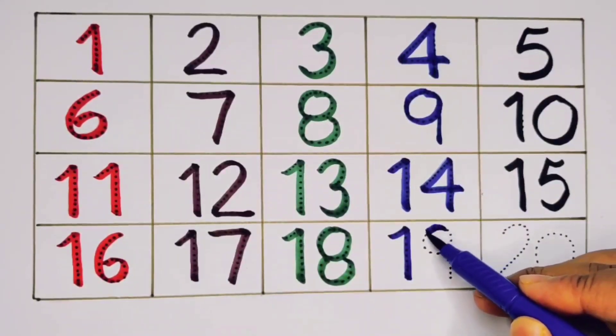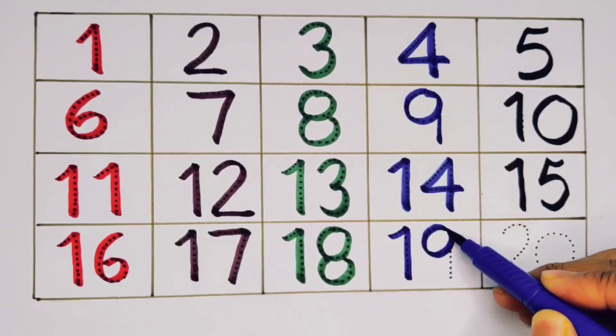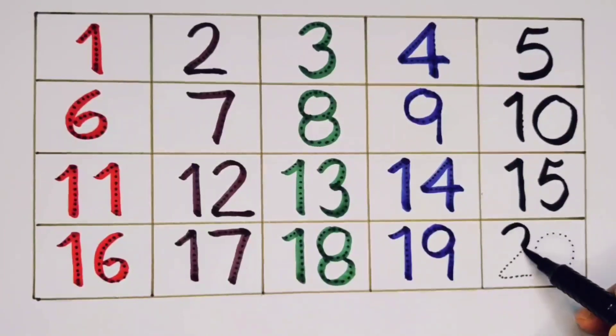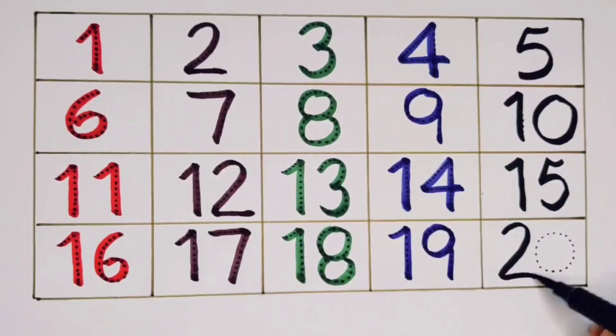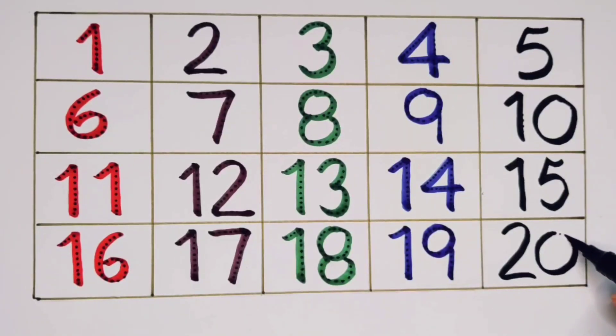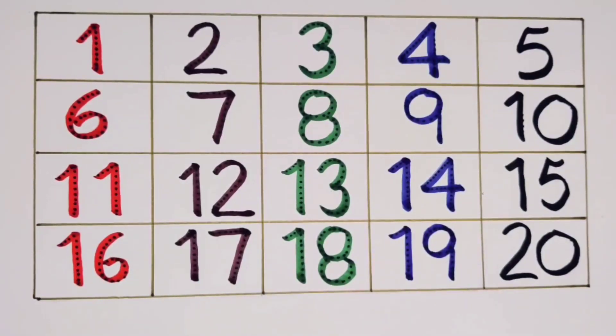One, nine, nineteen. Two, zero, twenty. What we learn?